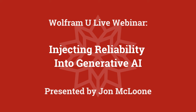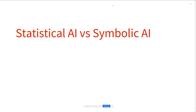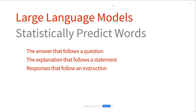Today, what I want to talk about is ChatGPT and how that fits in with the Wolfram worldview. But what today's talk is fundamentally about is the differences between statistical AI and symbolic AI. First of all, let me try and define the difference between statistical AI and symbolic AI.